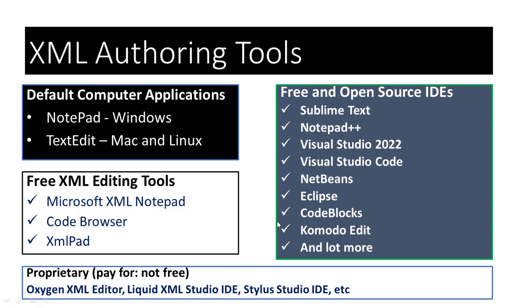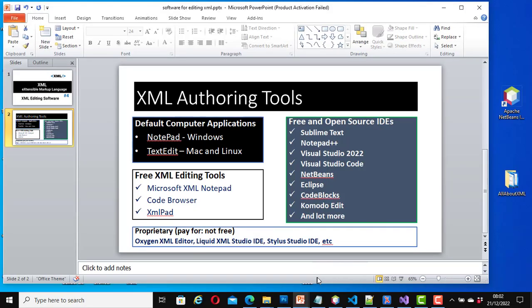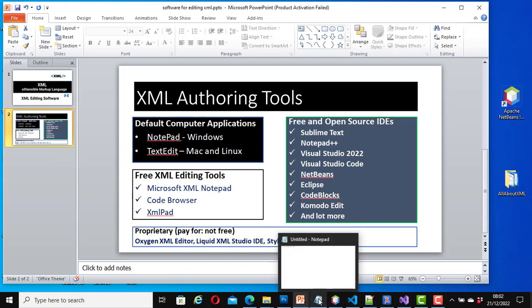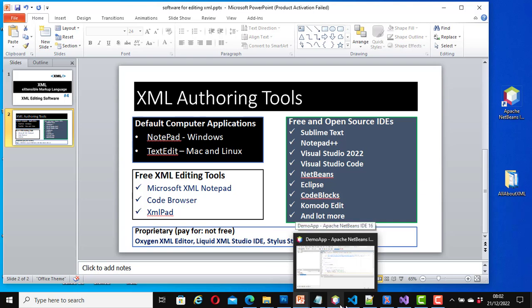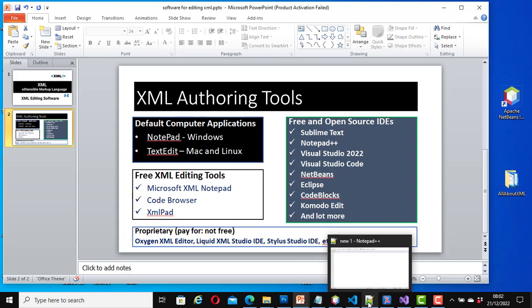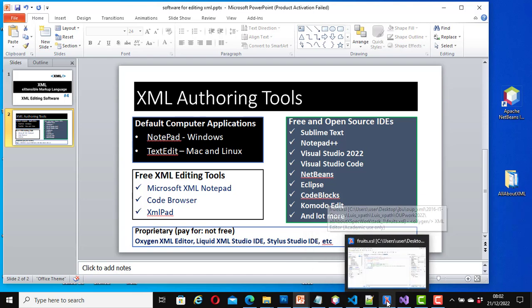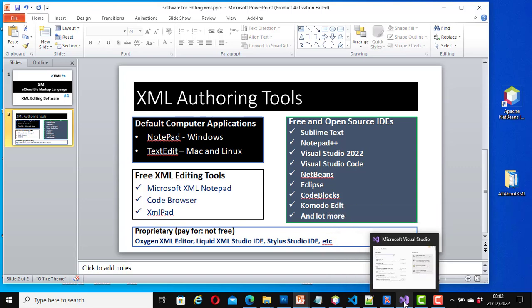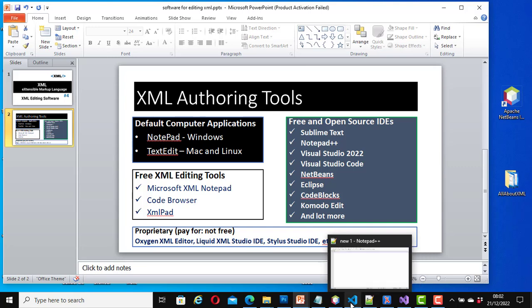Let's look at some of them. Here, I have some of the tools installed on my machine and they are open. You can see them here: this is Notepad, this is NetBeans, this is Visual Studio Code, this is Notepad++, this is Oxygen, and this is Visual Studio 2022. I have many other tools installed on my machine. Of course, you may not need all of these — it depends on what you want to do, but at least you can install some of them.